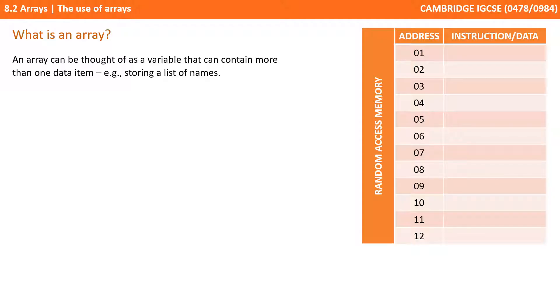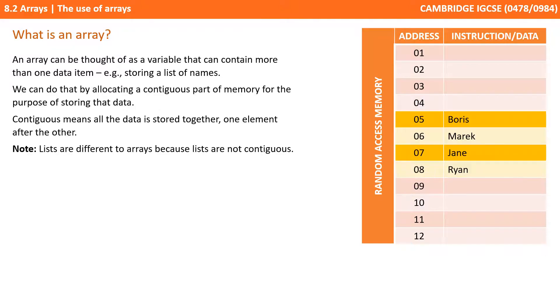You can think of it as a variable that contains more than one data item. For example, let's say we wanted to store a list of names, which of course would be strings. We can do that by allocating a contiguous part of memory for the purpose of storing that data. Contiguous simply means that all the data is stored together, one element after another.